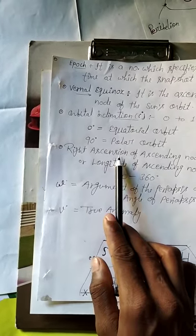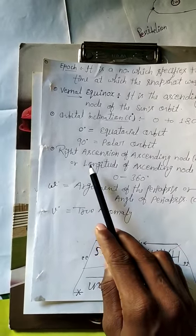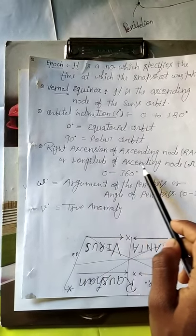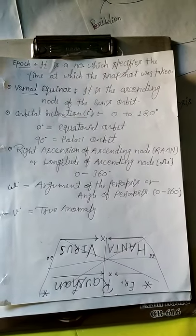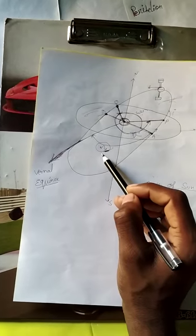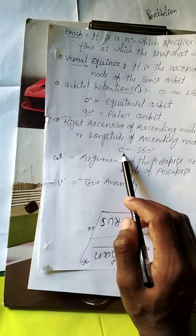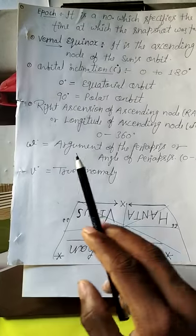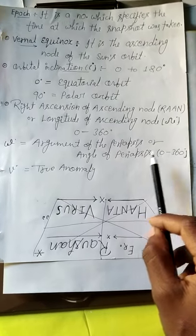The right ascension of the ascending node, also known as RAAN, is also called the longitude of ascending node. It is represented by the capital Greek letter Omega (Ω) and it varies from 0 to 360 degrees. The argument of periapsis omega (ω) also varies from 0 to 360 degrees.